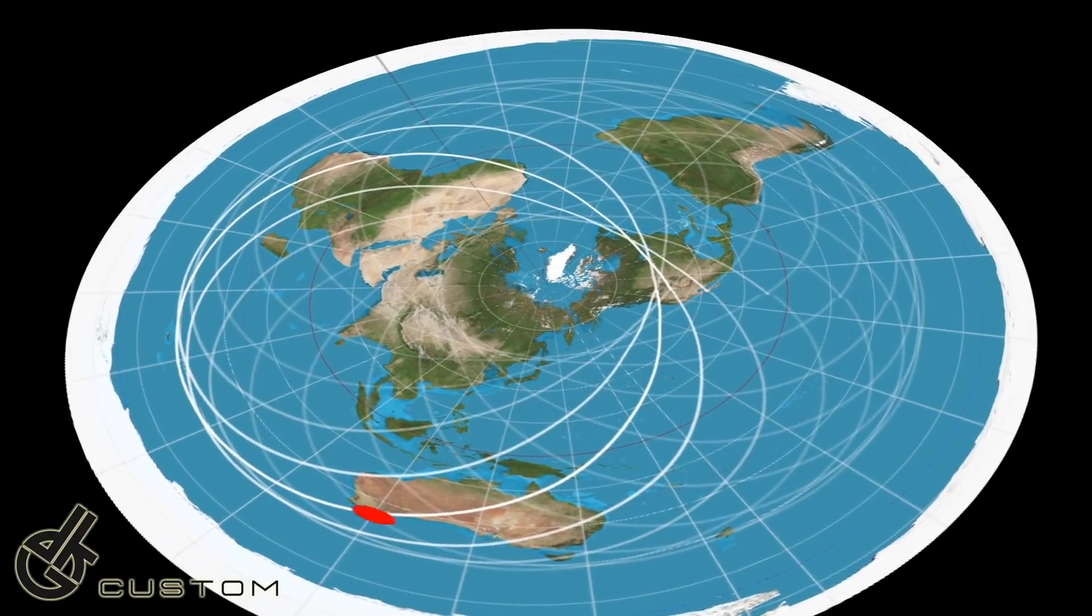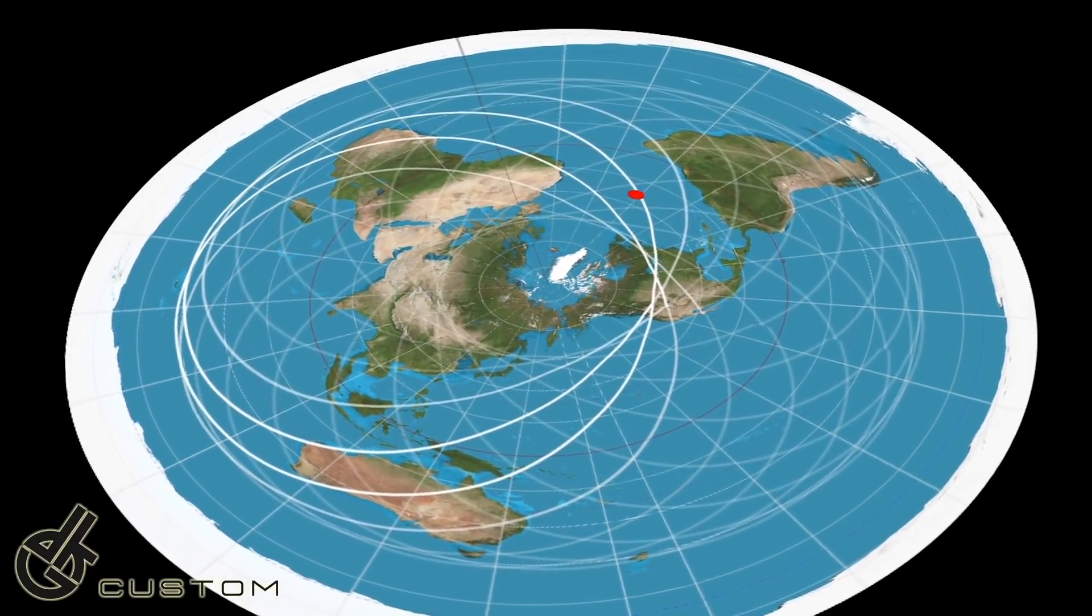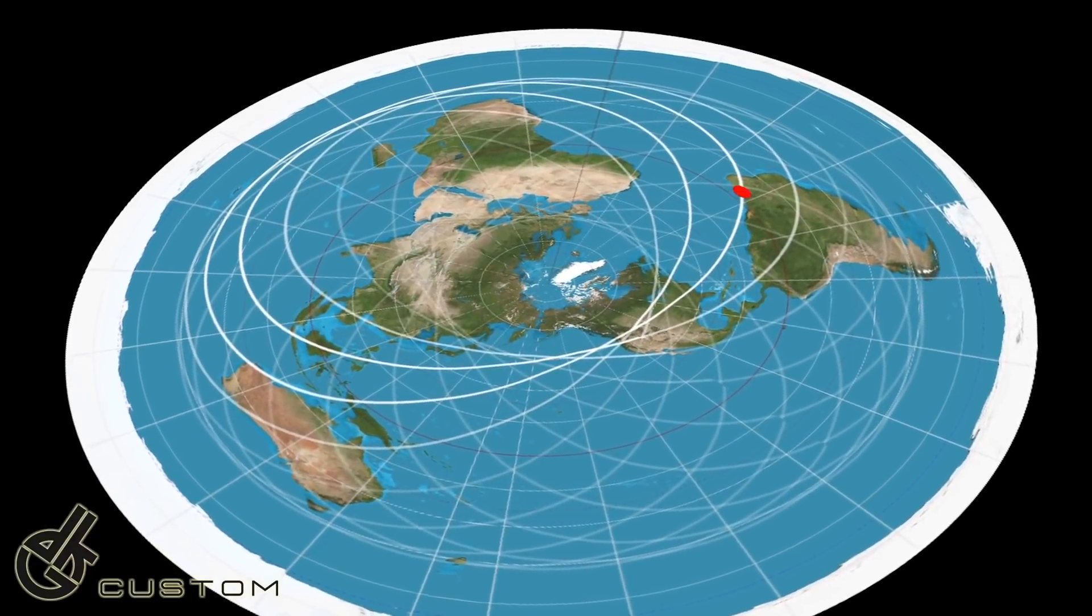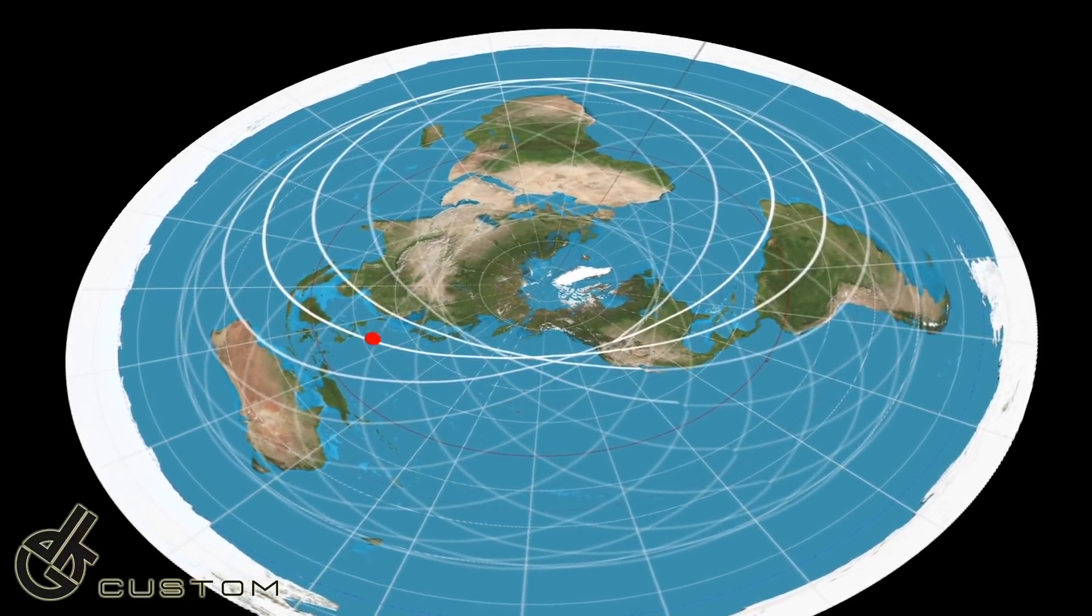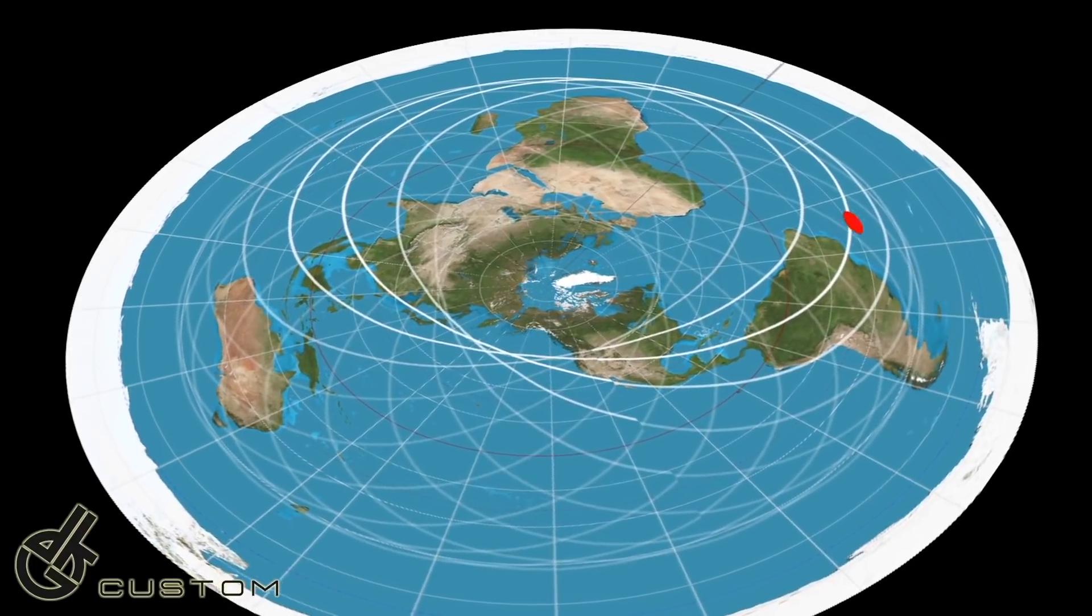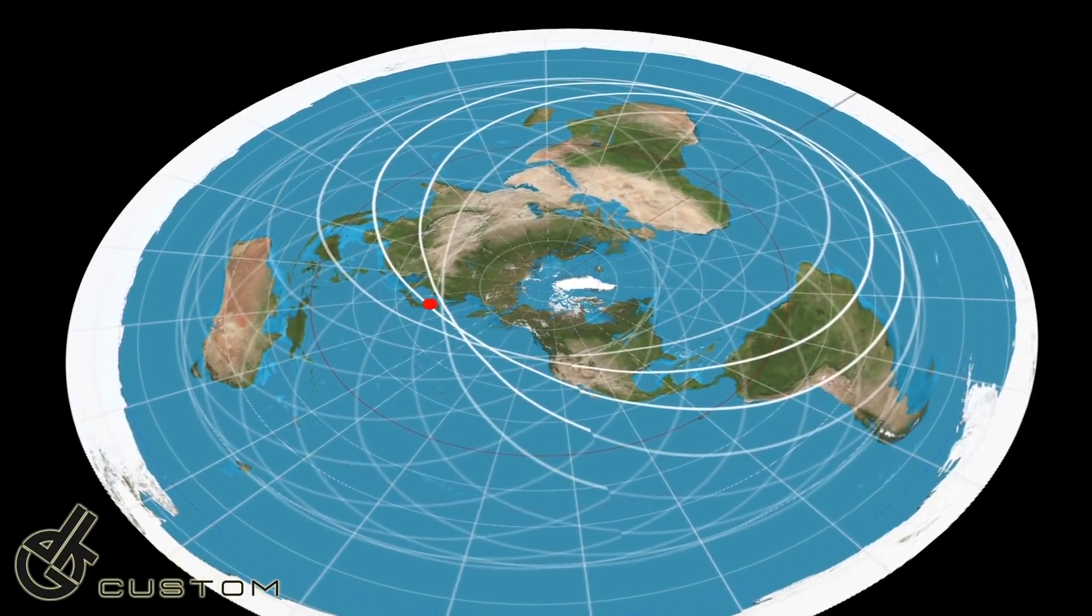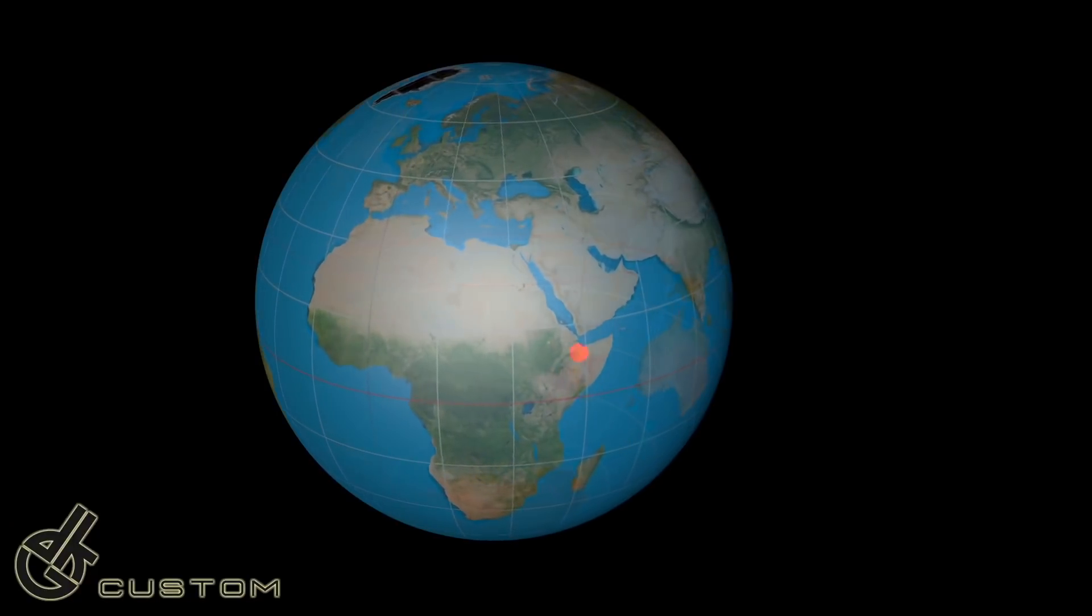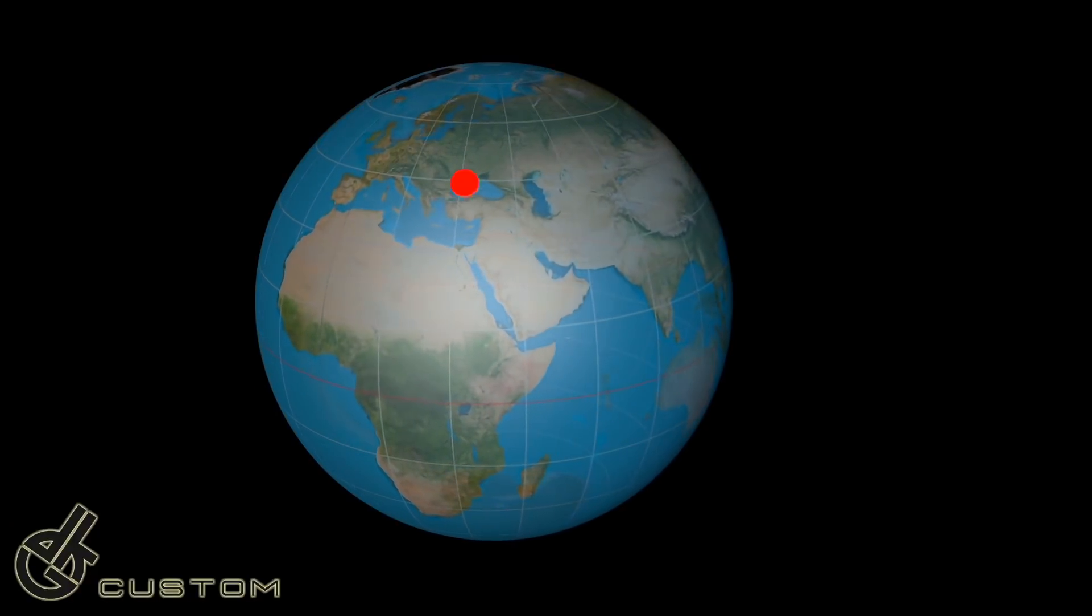So there you have it fluffers, the ISS proves the earth is spinning and proves we cannot be on a flat earth model. The only way to make it work is to pull the drawstring around the edge of the flat earth tight until it makes a globe. Until next time, you buggers.